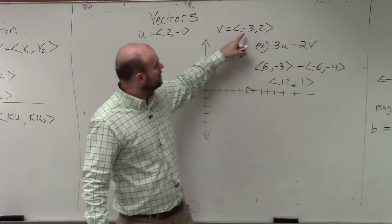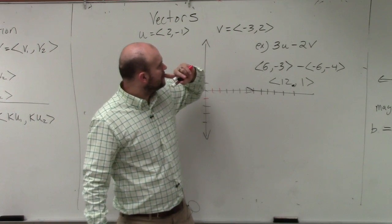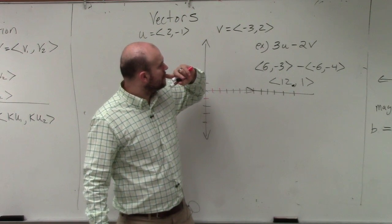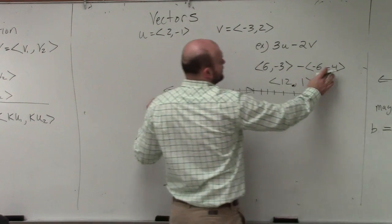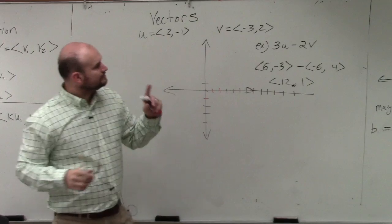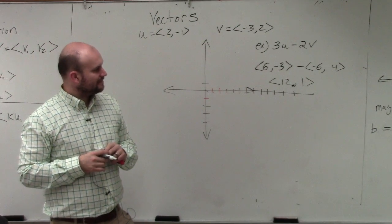So if you multiply it by 2, that should have been a 4. If you multiply it by 2 but keep it as a negative, right? There we go.